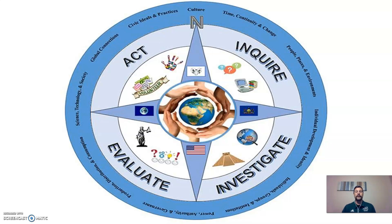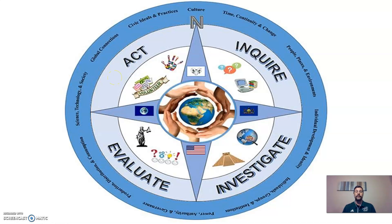That brings us to the next ring, where you'll notice four different actions. I like to think of it in a particular rotation. First, we inquire; then we investigate the question we are inquiring about; then we evaluate the possible solutions and facts at our disposal regarding that question. Finally, we act on that — we come up with an idea based on the information we have inquired, investigated, and evaluated in order to arrive at a truer understanding of that particular element.